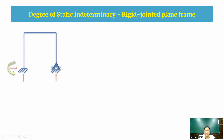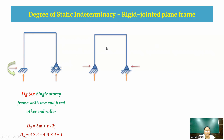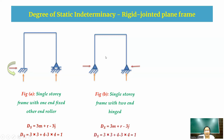For a single-story frame with one fixed end and one roller end: DS = 3m + r − 3j = 3(3) + 4 − 3(4) = 9 + 4 − 12 = 1. For a single-story frame with both ends hinged: members = 3, reactions = 4, joints = 4, so DS = 9 + 4 − 12 = 1. Both single-story frames have a degree of static indeterminacy of 1.